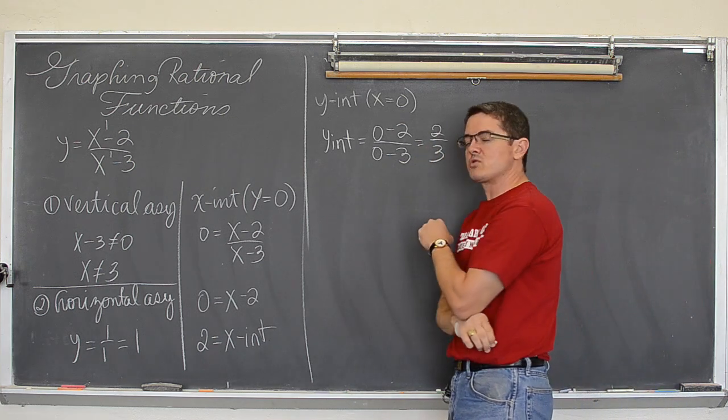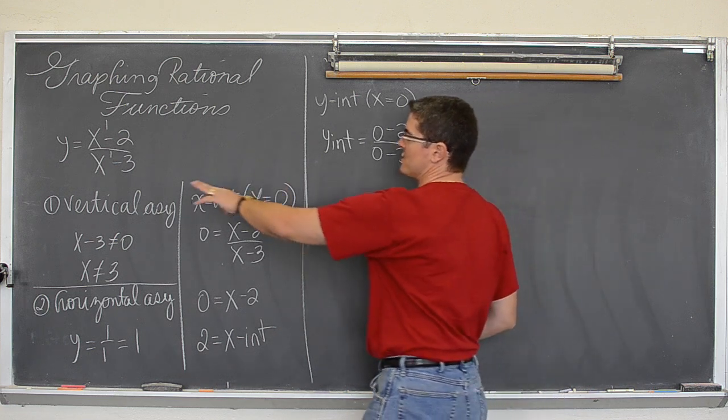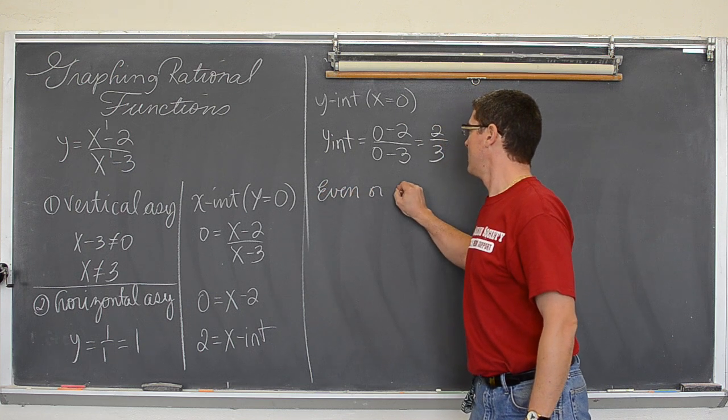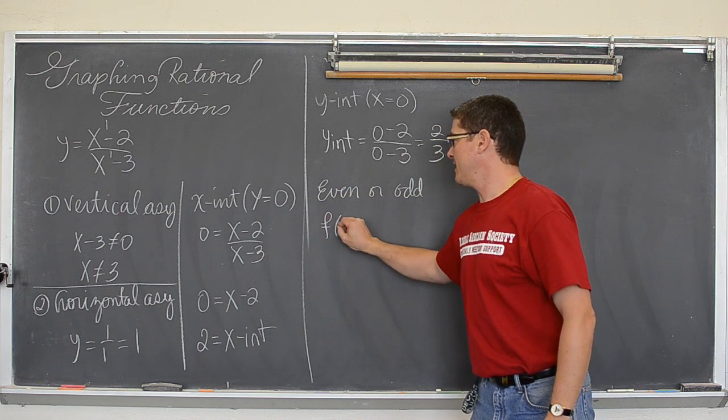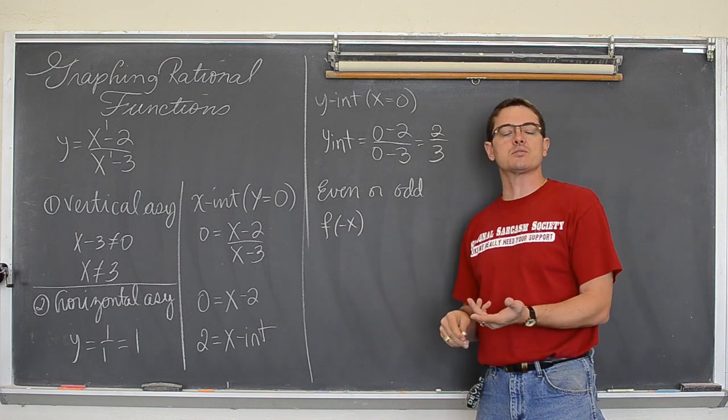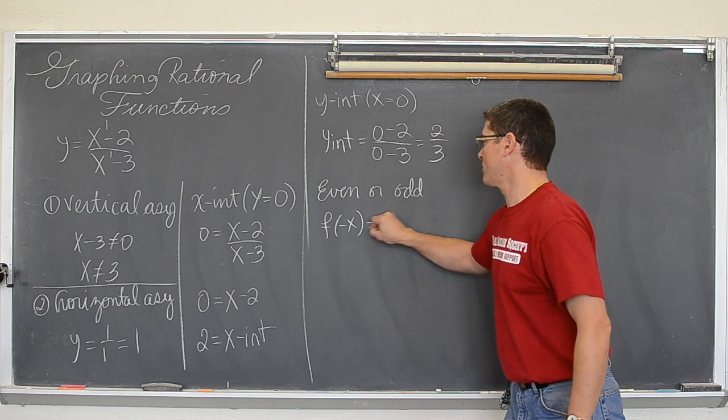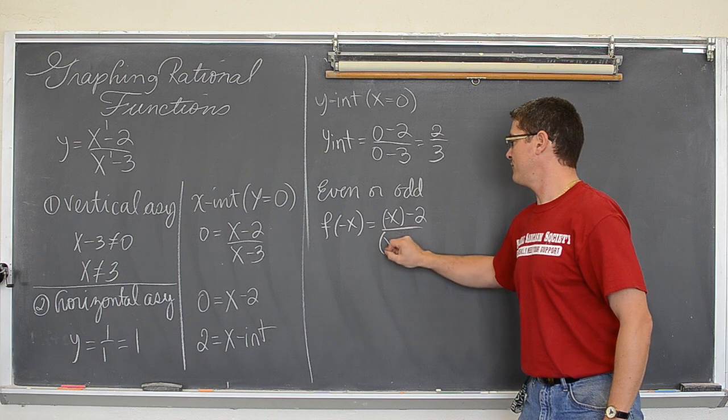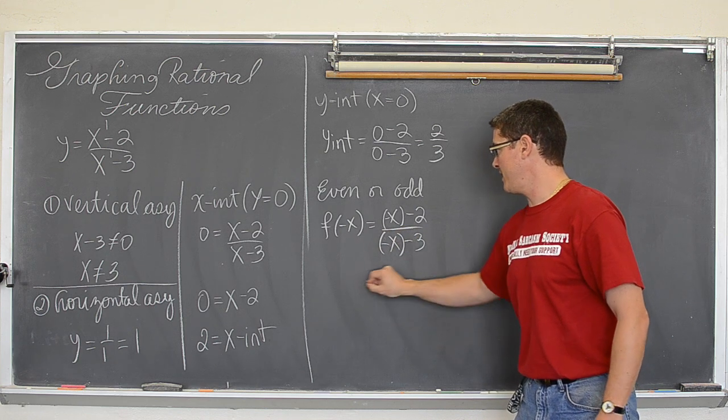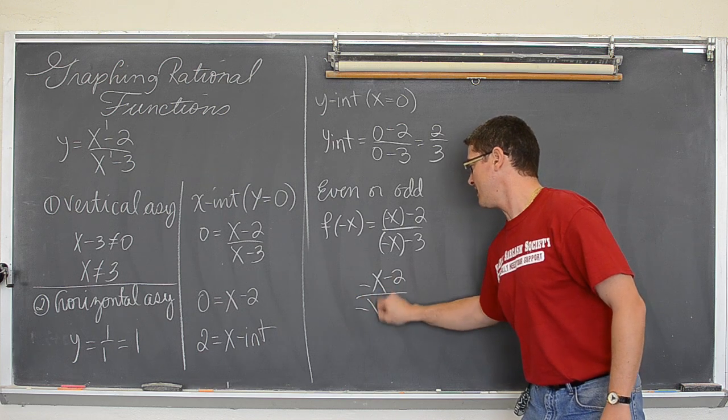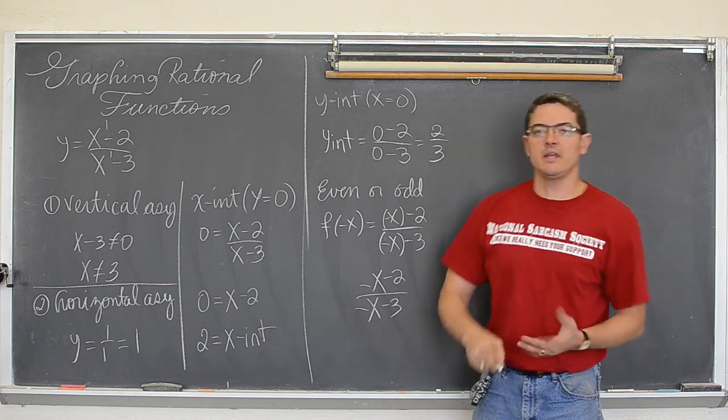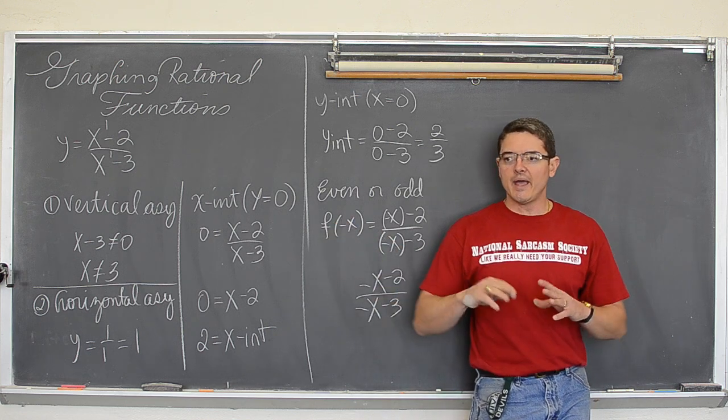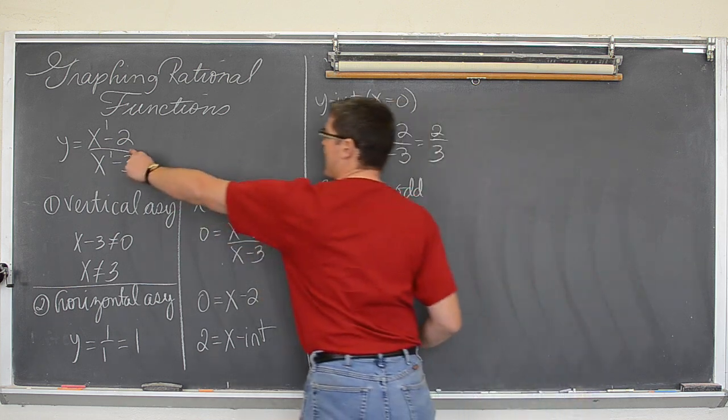Now another thing to check which would be nice for graphing is, is this function even or is it odd? Let's plug in even or odd. You do that by plugging in negative x into your function and seeing if all the signs are the same or if all the signs are different. So we are going to write negative x minus two over negative x minus three. And we get negative x minus two over negative x minus three. Well first of all, is it even? If my function, if I plug in negative x and I get right back to the original function, then it is even.